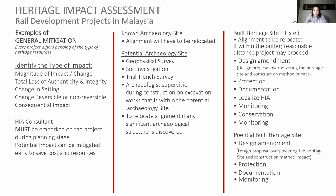For an archaeological site, if the alignment is going to pass directly through it, the alignment will have to be relocated. The same applies to natural sites — we have cases where a development going through a natural site required an alignment change. For potential archaeological sites, we start by doing a geophysical survey, a soil investigation, and a trial trench survey. Archaeologists must be at the site during all deep excavation. If during construction they find something significant, the alignment will have to be relocated — we have experienced a few cases of this.